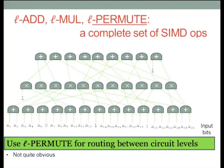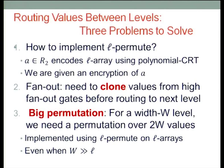This is the plan, though it's not entirely obvious how to do that. L-permute clearly helps if you have it, but there are a few things to answer. First, you need to say how to implement L-permute. Second, once you have L-permute, it's not enough because it's not a permutation from one level to the next — some gates have high fan-out, so you need to clone efficiently. And third, L-permute only permutes inside one array of L entries, but a level could have width much larger than L, so you need to turn these small permutations into a big permutation on the entire level.